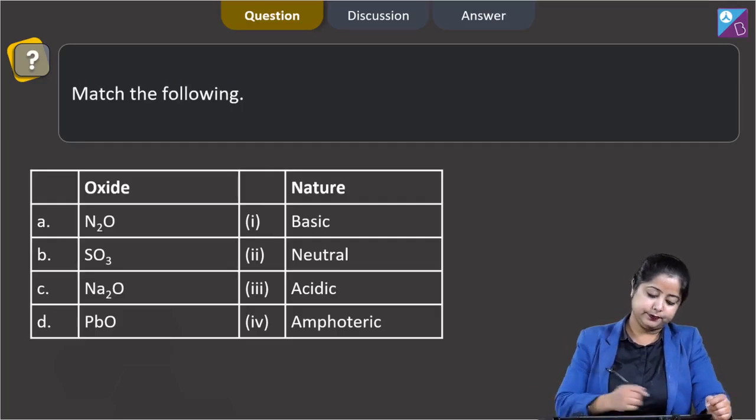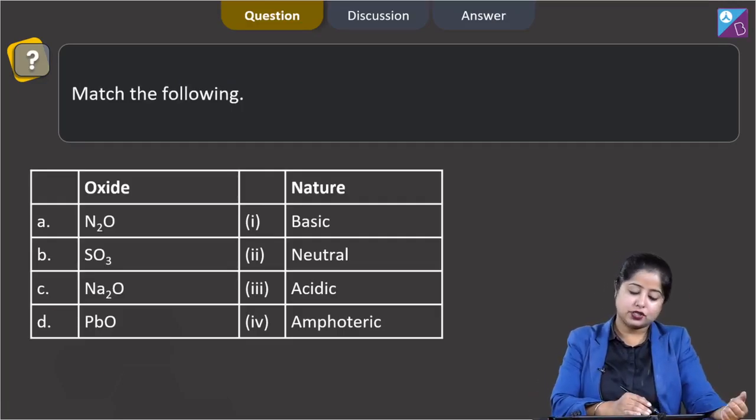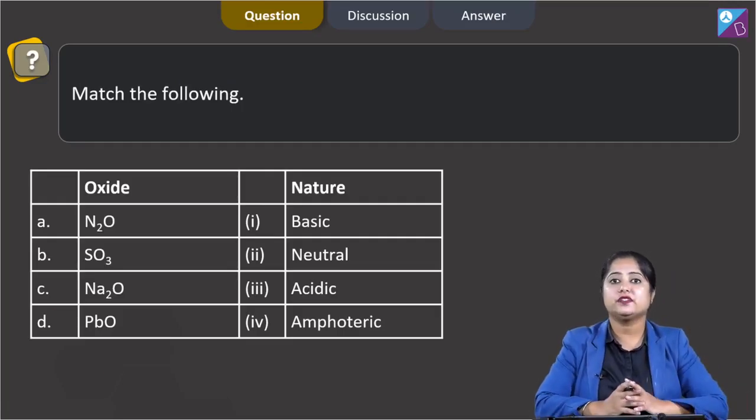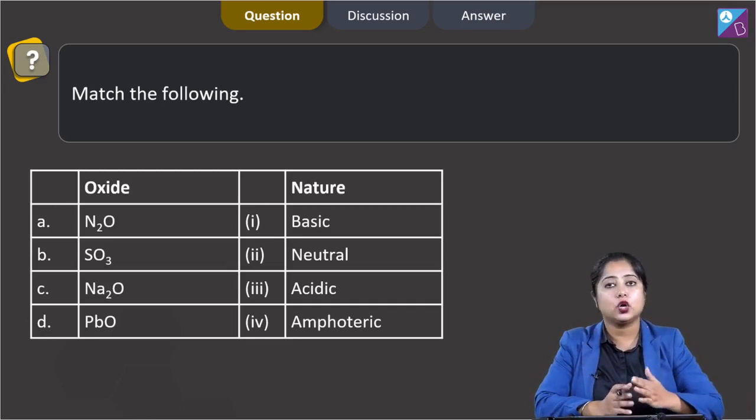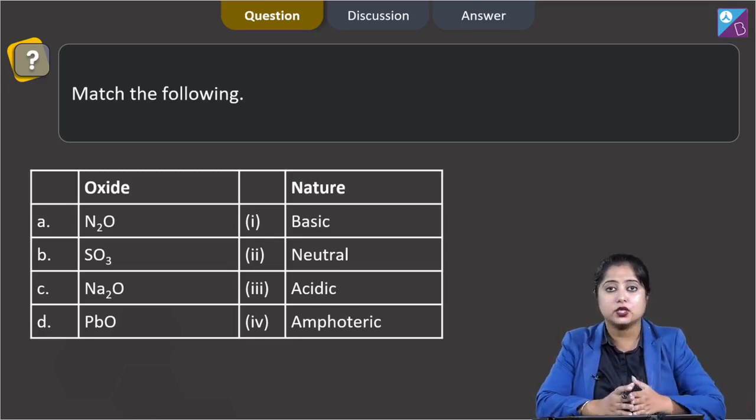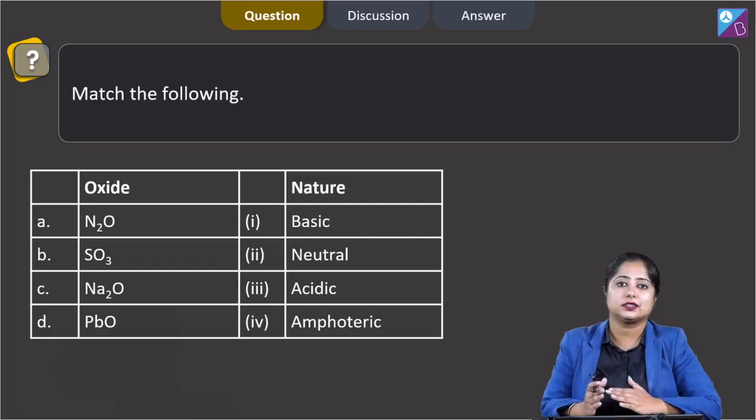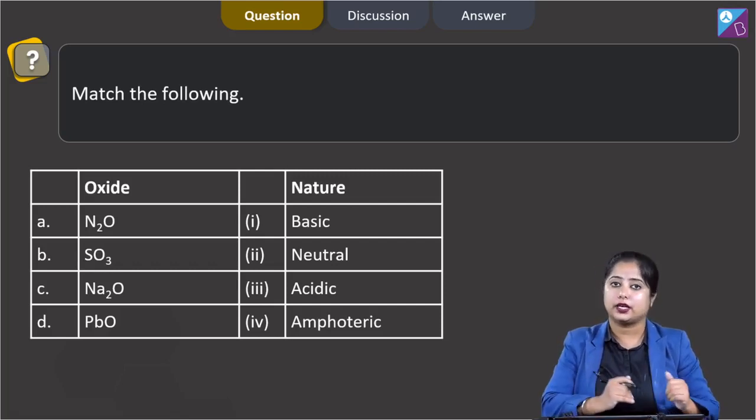Moving to the next question, match the following. Students, in this question we are given with two columns. In column 1 we are given certain oxides and in column 2 we are given their characteristics, and we have to identify the correct match.